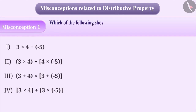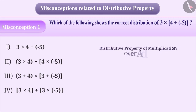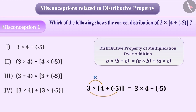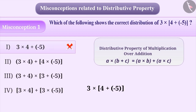Misconception 1. Which of the following shows the correct distribution of 3 multiplied by 4 plus minus 5? Often, the distributive property of multiplication over addition can be used incorrectly. For example, some children multiply the number outside the bracket with the first number inside the bracket, but they either forget or ignore to multiply it with the second number inside the bracket. So, option 1 is the incorrect answer.